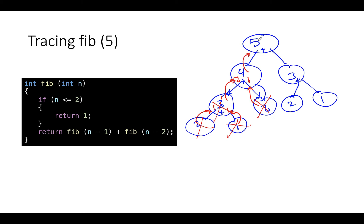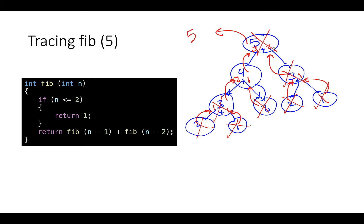Each time we hit two or one, we return one. One plus one gives two returned here. Three plus two gives five, which is returned to the main function. So the result is five. All stack frames are thrown away once they return.